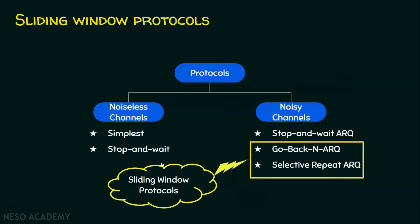The sliding window protocol is different from the traditional stop-and-wait protocol. In stop-and-wait, only one frame is sent at a time and the sender will not send the next frame without receiving the acknowledgement for the previously sent frame. Whereas in sliding window protocol, multiple frames can be sent at a time. The variations of sliding window protocols are Go-Back-N ARQ and Selective Repeat ARQ. The topic of today is Go-Back-N ARQ.